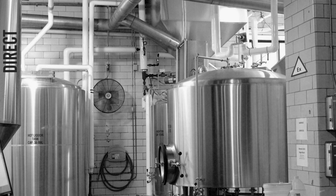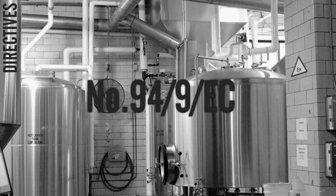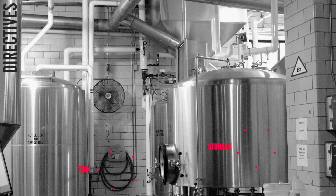ATEX is a name commonly given to two European directives for controlling explosive atmospheres. The first directive, 94/9/EC, also known as ATEX 95 or the ATEX Equipment Directive, concerns equipment and protective systems for use in potentially explosive atmospheres. This would include appliances and tools, both electrical or mechanical.